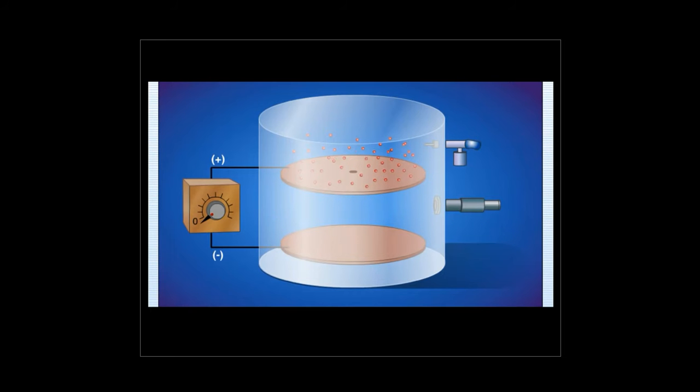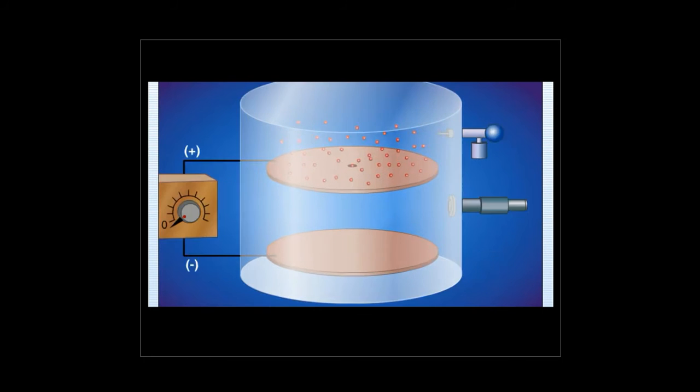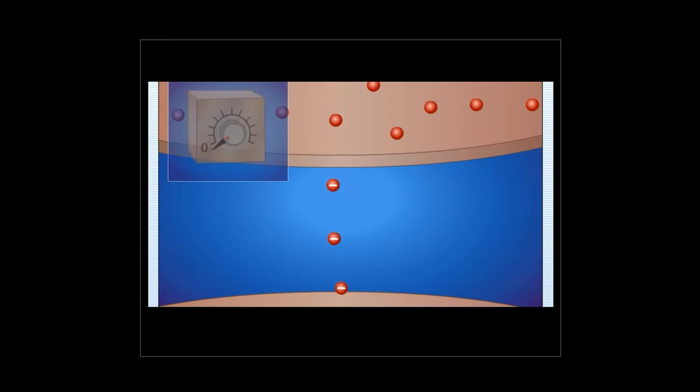The negatively charged oil droplets can be halted by adjusting the voltage across the two plates. As the voltage across the plates is increased, the velocity of the oil drops slows. As the voltage is increased further, some drops will begin to move upward toward the positive plate. If the voltage is set just right, an oil drop can be suspended.